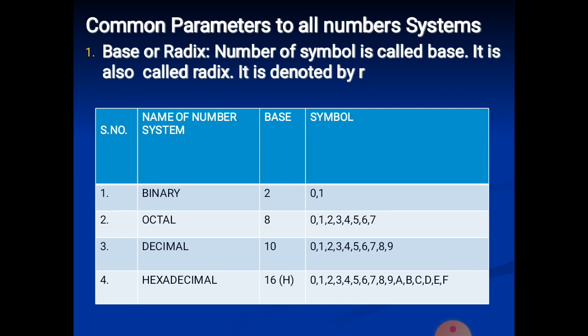There are some common parameters. For example, largest value of digit: in any number system, the largest value of a digit is 1 less than the base. As we saw for decimal number, the maximum digit is 9 and base is 10, so it is 1 less. For binary number, base is 2 so the largest digit is 1. For octal, 1 less than 8 gives largest value 7.